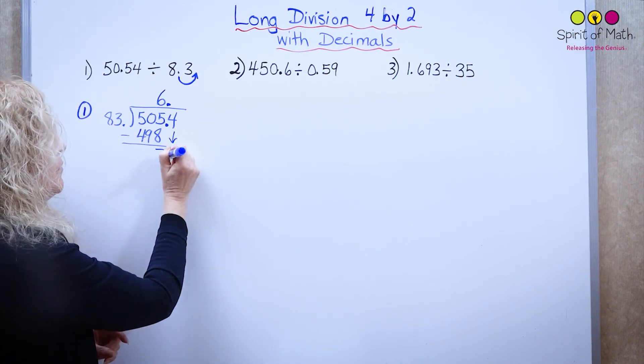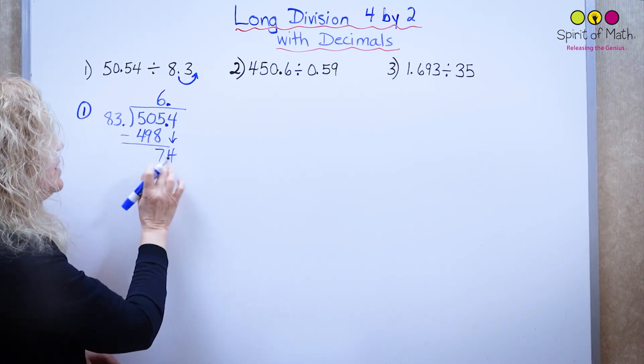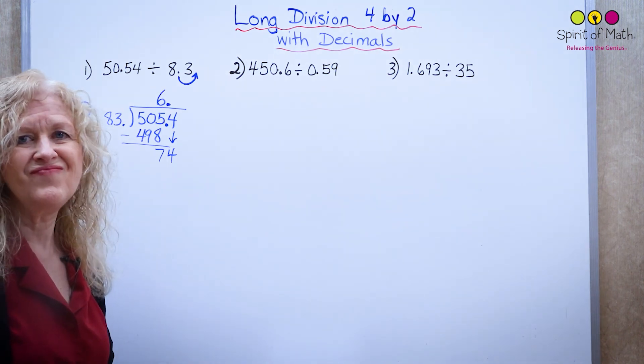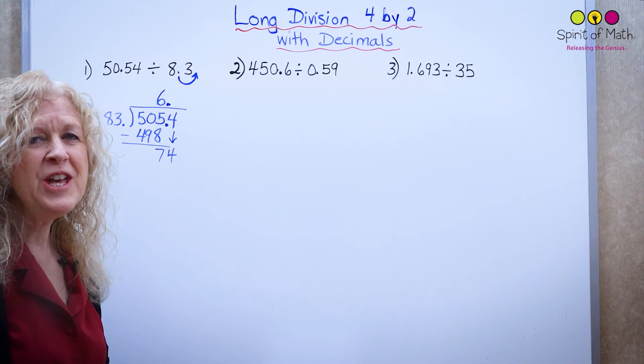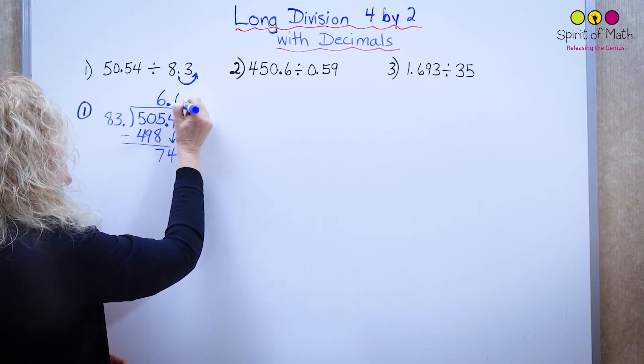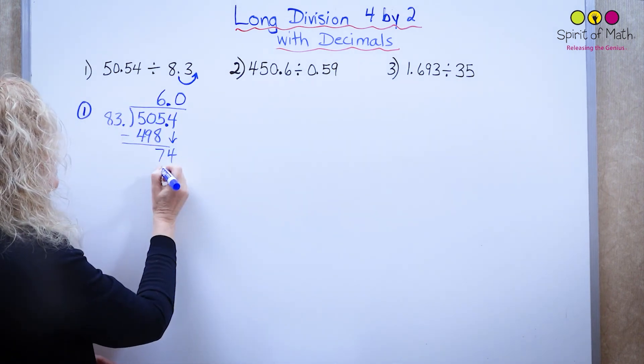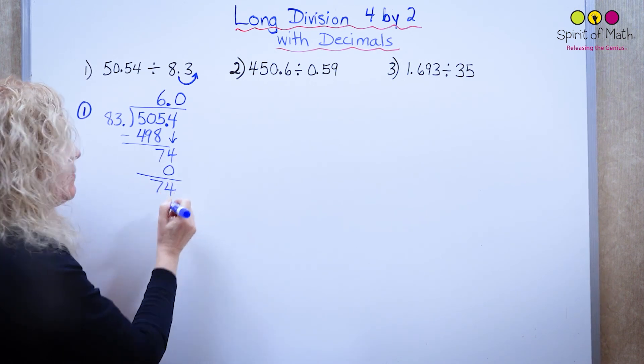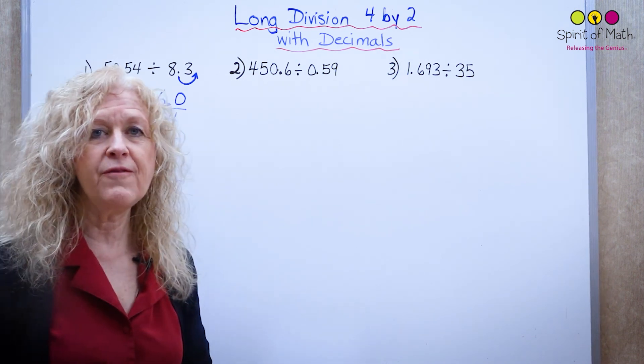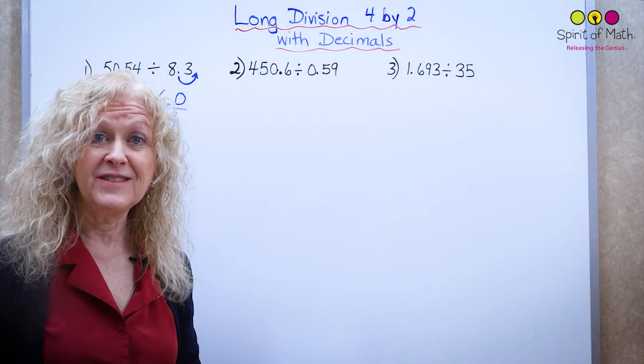Now let's pull down the 4. Now 83 into 74. You can't take any groups of 83 out of 74, so we're going to say zero. Zero times 83 is zero, and you're left with a remainder of 74. And that's fine.